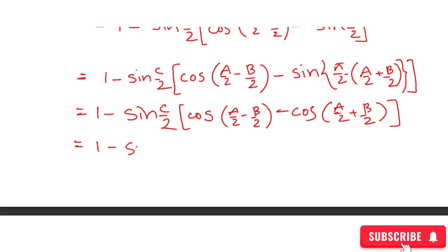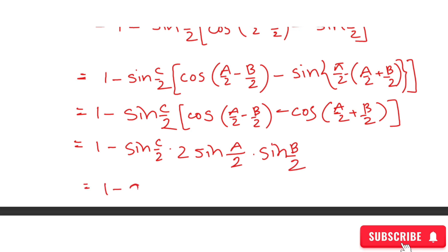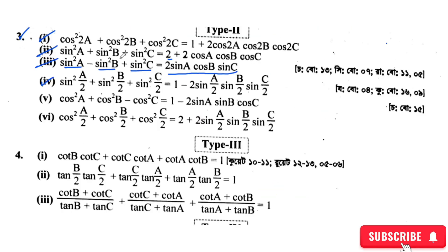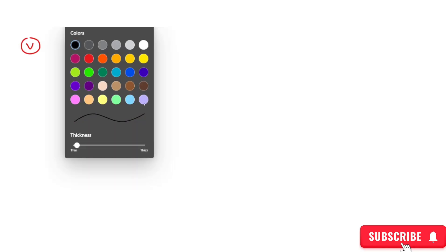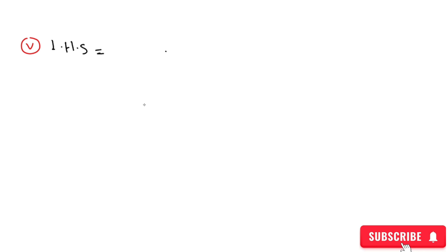We use 2 sin(a/2) sin(b/2) — the product to sum formula — giving cos((a-b)/2) minus cos((a+b)/2). Taking sin(c/2) common, we get a final expression. The answer should be equal to: 1 minus 2 sin(a/2) sin(b/2) sin(c/2). The left-hand side gives cos²(a) plus cos²(b) plus cos²(c).